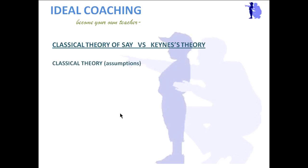Let's start with classical theory of Say versus Keynes theory, and the classical theory assumptions. Before that, I want to highlight why this classical theory was made. About 200 years ago, some economists gathered together and made a theory with certain assumptions. They presumed that if these assumptions are fulfilled, then their theory will work.